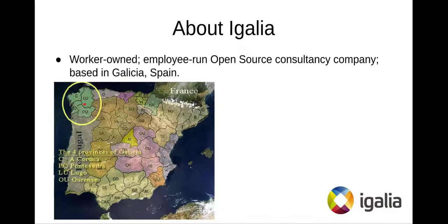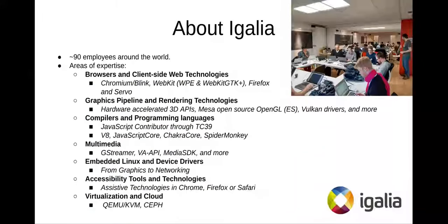EGALIA is a free software consultancy with headquarters in Spain and developers all around the world. It was established in 2001 with two main goals: open innovation and plus development. At this moment we are about 90 people working from different parts of the planet and we are experts in various areas. For example, we have teams who work on browsers and client-side web technologies like Chromium, Blink, WebKit, including WPE and WebKit GTK+, Firefox, Servo, Brave, and others.